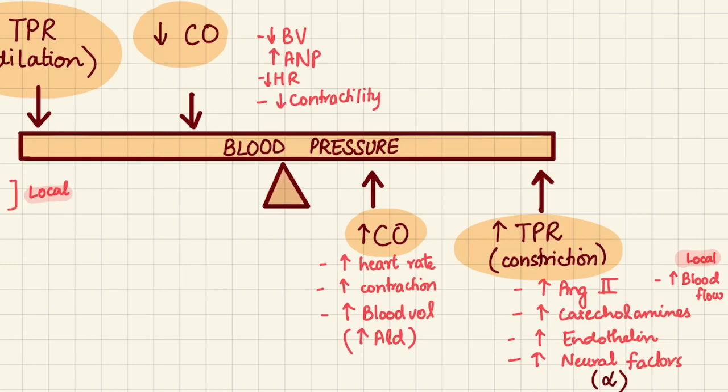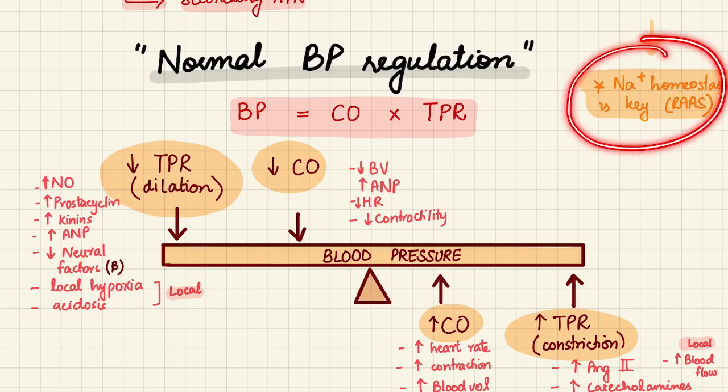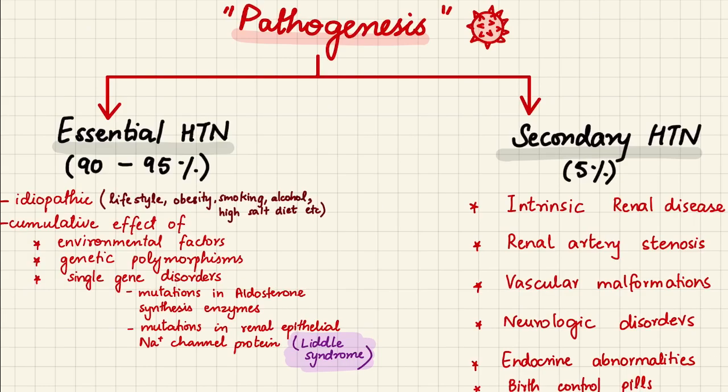Another important point: sodium homeostasis is key. The renin-angiotensin-aldosterone system is key in normal blood pressure regulation, and that is something you need to remember.